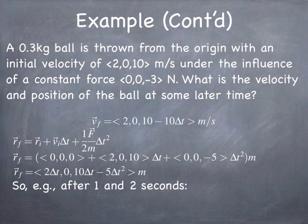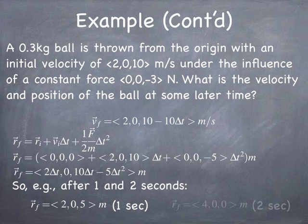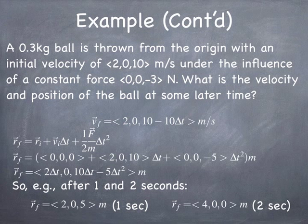For example, after 1 and 2 seconds respectively, the final position is (2, 0, 5) and (4, 0, 0). Notice that after 1 second the object has reached 5 meters in the z direction, but at 2 seconds it's back down to 0. Meanwhile in the x direction, the motion is uniform — at 0 seconds it starts at the origin, at 1 second it's at 2 meters, at 2 seconds at 4 meters, continuing at 2 meters per second.